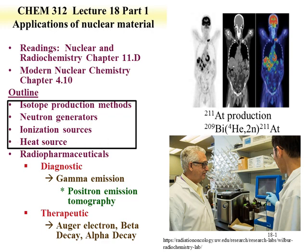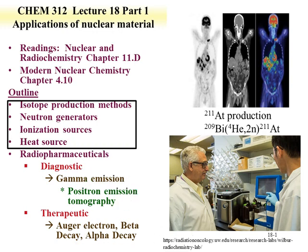The first lecture will cover isotope production methods, neutron generators, ionization sources, and heat sources. One of the heat sources highlighted is plutonium-238, which produces heat used to generate electricity. An example is the Cassini space mission, which is currently exploring the rings of Saturn, with plutonium-238 powering the instrumentation used to evaluate Saturn's rings and other objects during the mission.